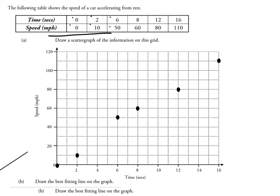So I've drawn a scatter graph, put my points on. Now, B, down at the bottom, says draw the best fitting line on the graph.